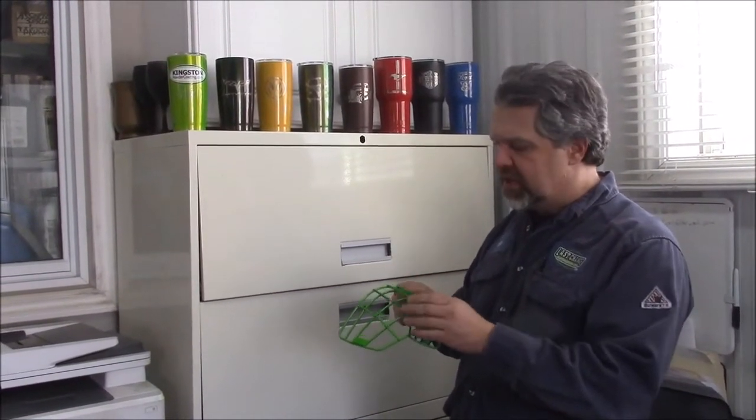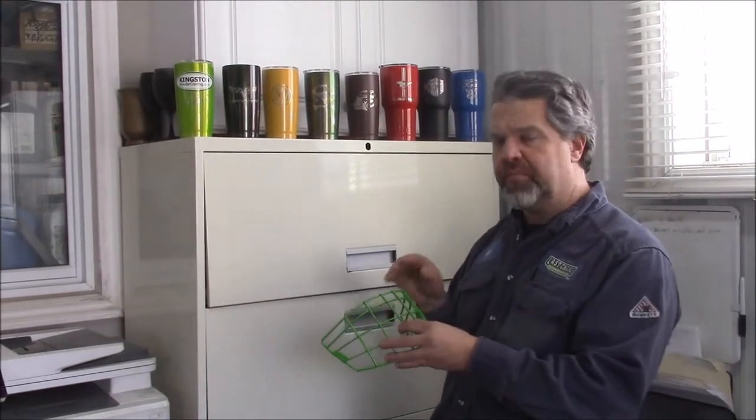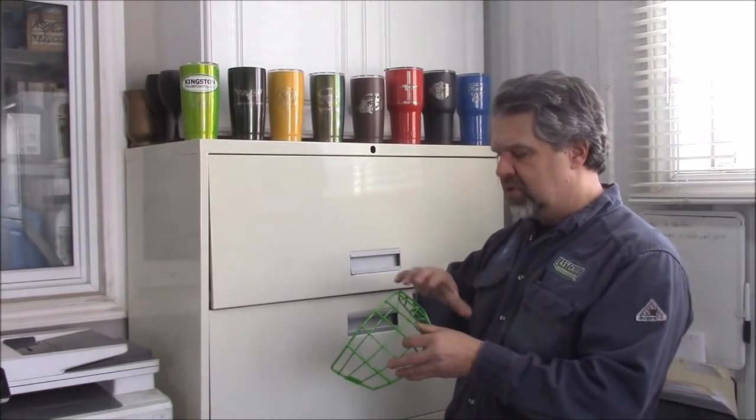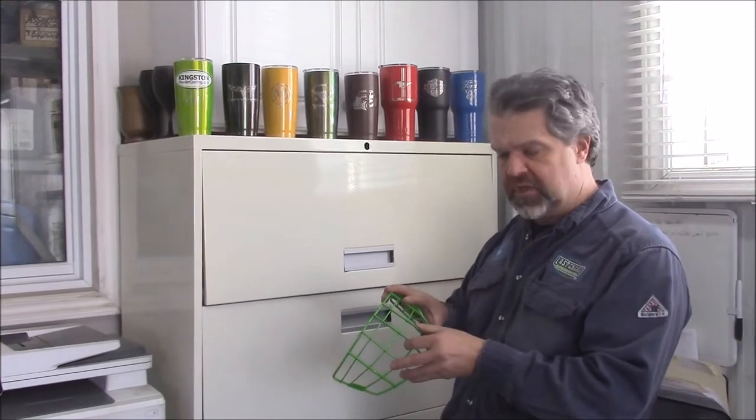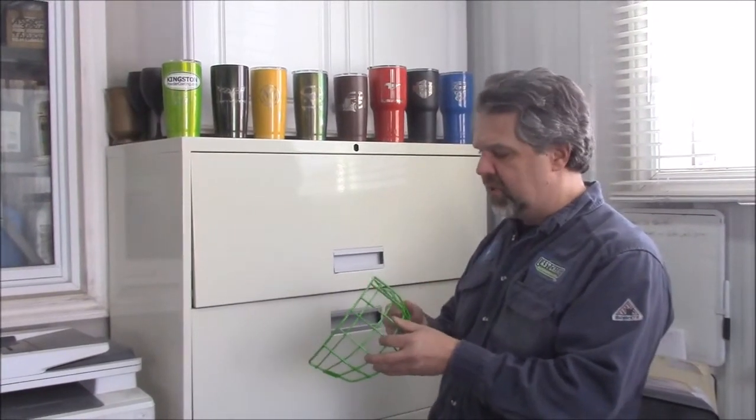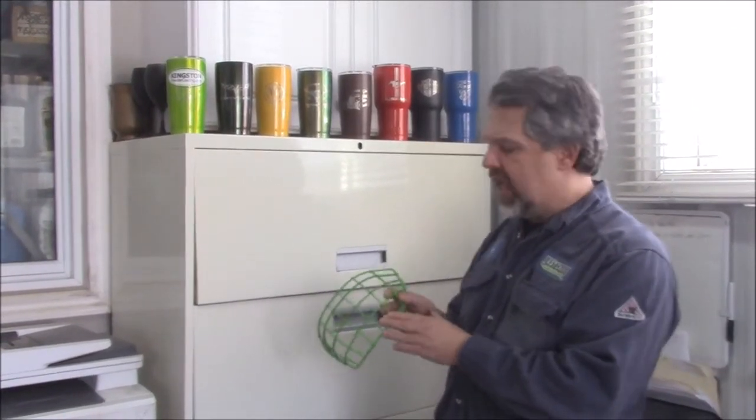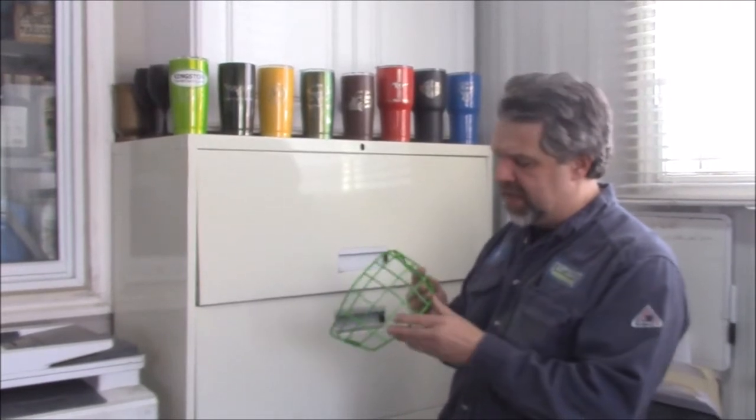We used a stripper because it's very difficult to remove powder coating. So between using a special commercial grade stripper and sandblasting, we were able to get this cage to bare metal. And then we treated it with this lime green baked-on finish.